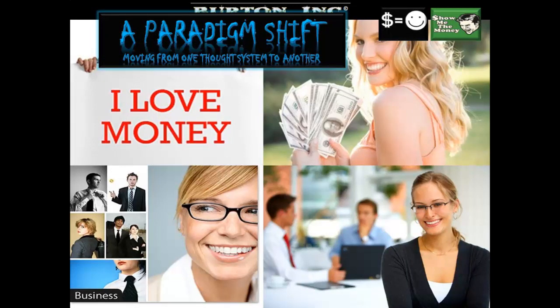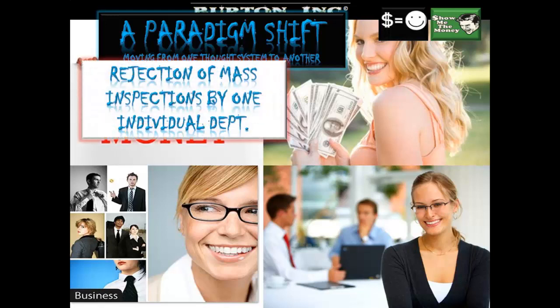There has definitely been a huge paradigm shift moving from quality control to quality assurance — from one thought system to another. Essentially, as we shifted from quality control to quality assurance, there was a rejection of mass inspections by one individual department. Often these large companies used to have a specialized department called quality control, and it was their job to go through and inspect the final product, make sure it was up to scratch, point out flaws, and not let the reject models get to market.